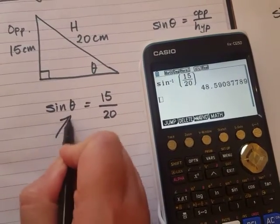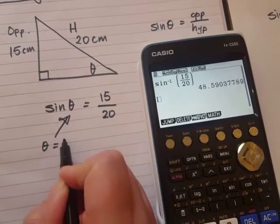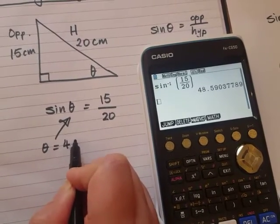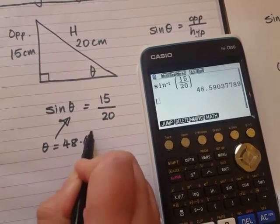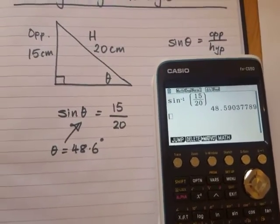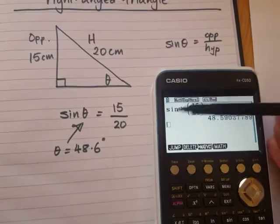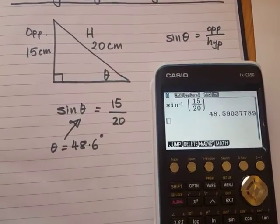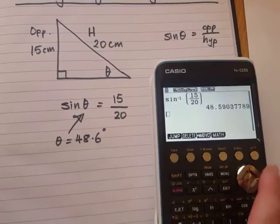So the angle was 48.6 degrees. Now when you do your working out in your book, whatever we typed into our calculator, that's what we have to write down.